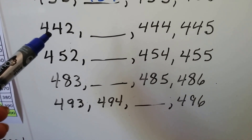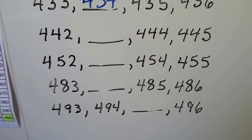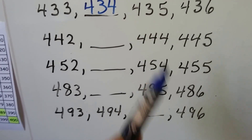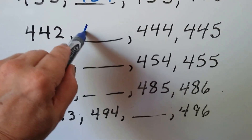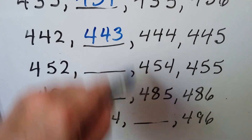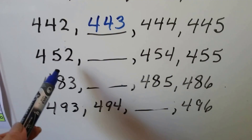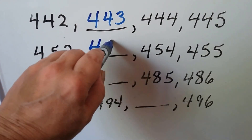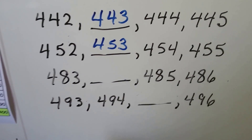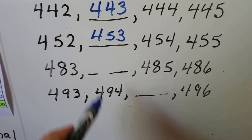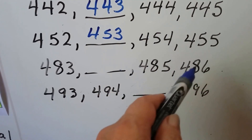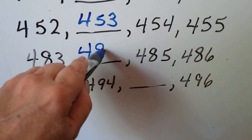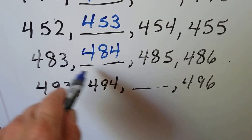What about 442 — what would be the very next number? If you said 443, you're right — that would be one more. What would be one more after 452? If you said 453, you're right. How about 483 and then something, with 485 and 486 after? If you said 484, you're right. The hundreds and the tens are staying the same, and the ones are going up by one.